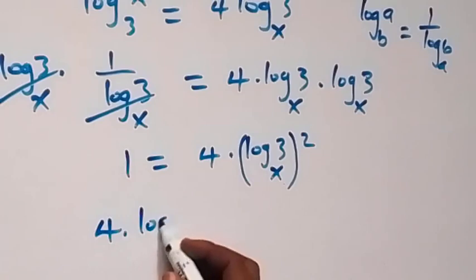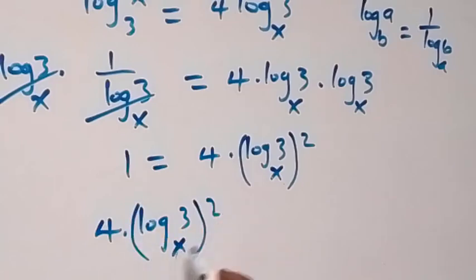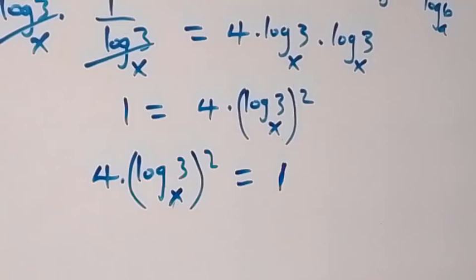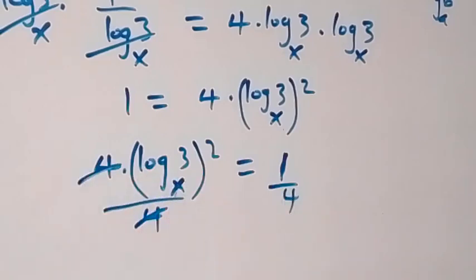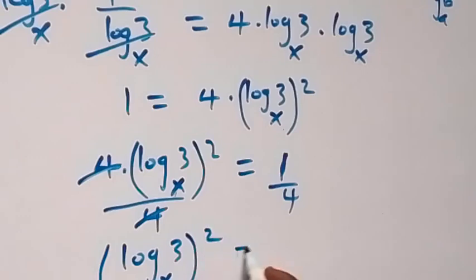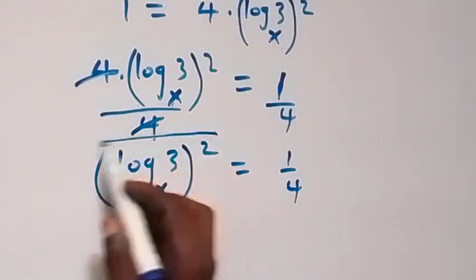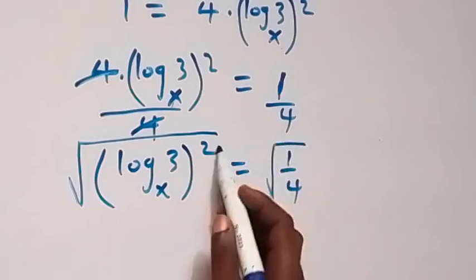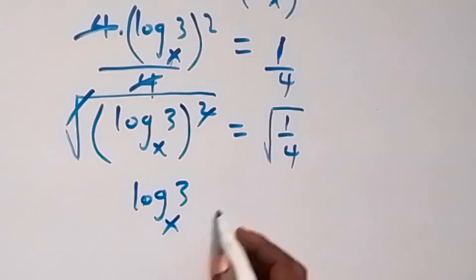We can write this as 4 times (log 3 base x)^2 equals 1. Dividing both sides by 4, we get (log 3 base x)^2 equals 1 over 4. Taking the square root on both sides, the square and square root cancel, giving log 3 base x equals plus or minus 1 over 2.